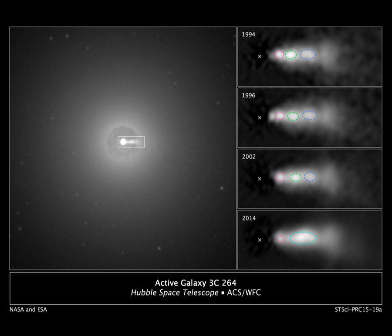Relativistic jets are beams of ionized matter accelerated close to the speed of light. Most have been observationally associated with central black holes of some active galaxies, radio galaxies or quasars, and also by galactic stellar black holes, neutron stars or pulsars. Beam lengths may extend between several thousand, hundreds of thousands or millions of parsecs.